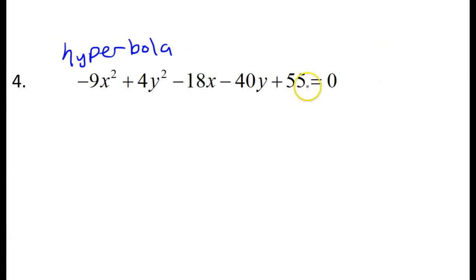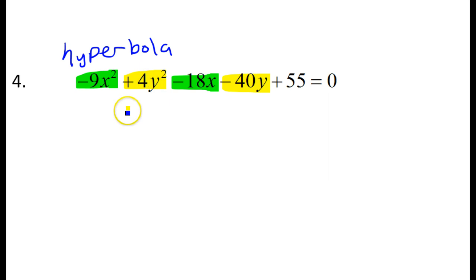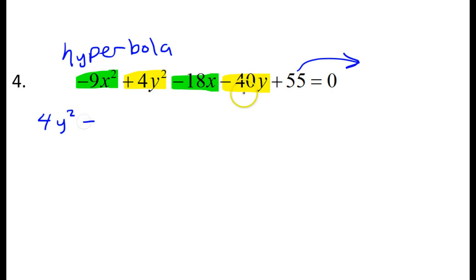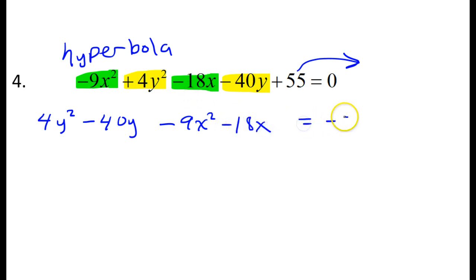Let's take a look at this hyperbola. I need to group together my x terms and my y terms, and I need to put the positive squared term first. So I'm going to put y squared in the front, followed by the x's. I'm going to put the y's first because the y squared term is positive. So I will have 4y squared minus 40y, and then minus 9x squared minus 18x, equals negative 55.